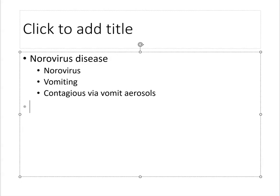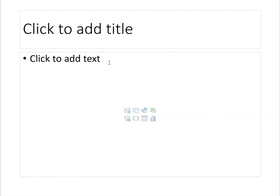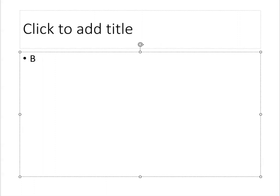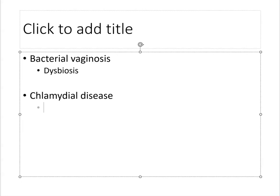Moving on to urogenital bacterial diseases. Bacterial vaginosis is a case of dysbiosis where lactic acid bacteria from the vaginal microbiota are displaced by other bacteria that don't produce lactic acid, don't decrease pH, and don't prevent pathogens from colonizing. There is also chlamydial disease, which is partially prevented by the normal vaginal microbiota — people with bacterial vaginosis are measurably at higher risk of chlamydia, though the effect is not overwhelming.